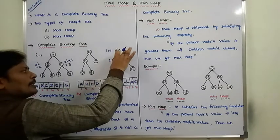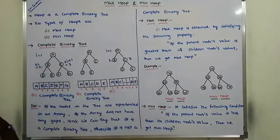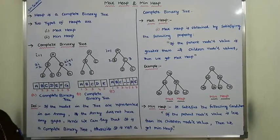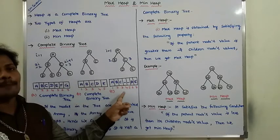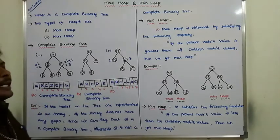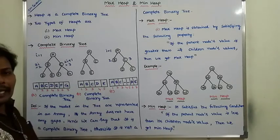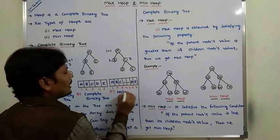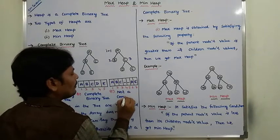This binary tree can be represented in that array representation, but there are 2 gaps. If there are any gaps in the array representation of a binary tree, hence we can say that it is not a complete binary tree.